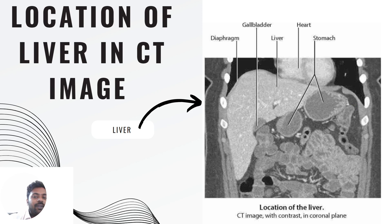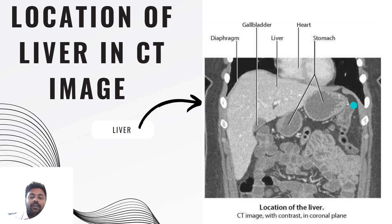The shape of the liver is triangular and the color of the liver is reddish brown. Coming to the measurements, it weighs about 1.4 to 1.8 kg in males, and in newborns it weighs about 150 grams.